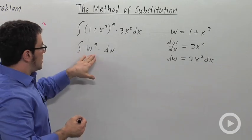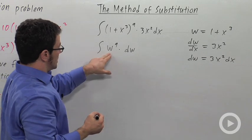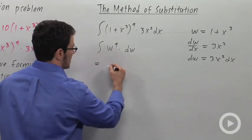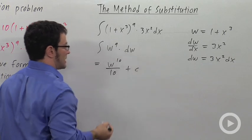I can integrate this using the power rule for anti-differentiation. Remember the way that works is you add 1 to the exponent. This becomes w to the 10th. And you divide by that same new exponent, plus c.